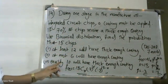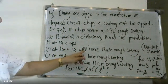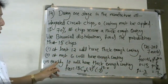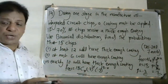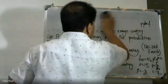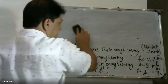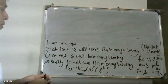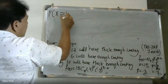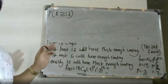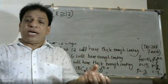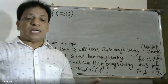Now we have three probabilities to find. First, at least 12 will have thick enough coating. Second, at most 6 will have enough coating. Third, exactly 10 will have thick enough coating. For at least 12, that means X is greater than or equal to 12, so X can take values 12, 13, 14, and 15.